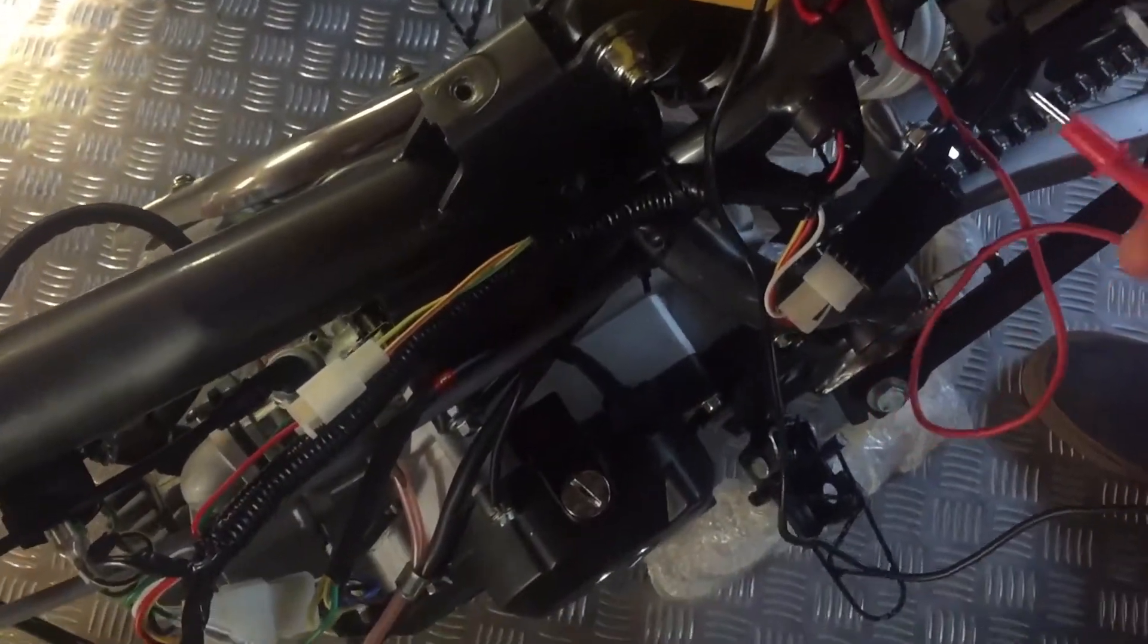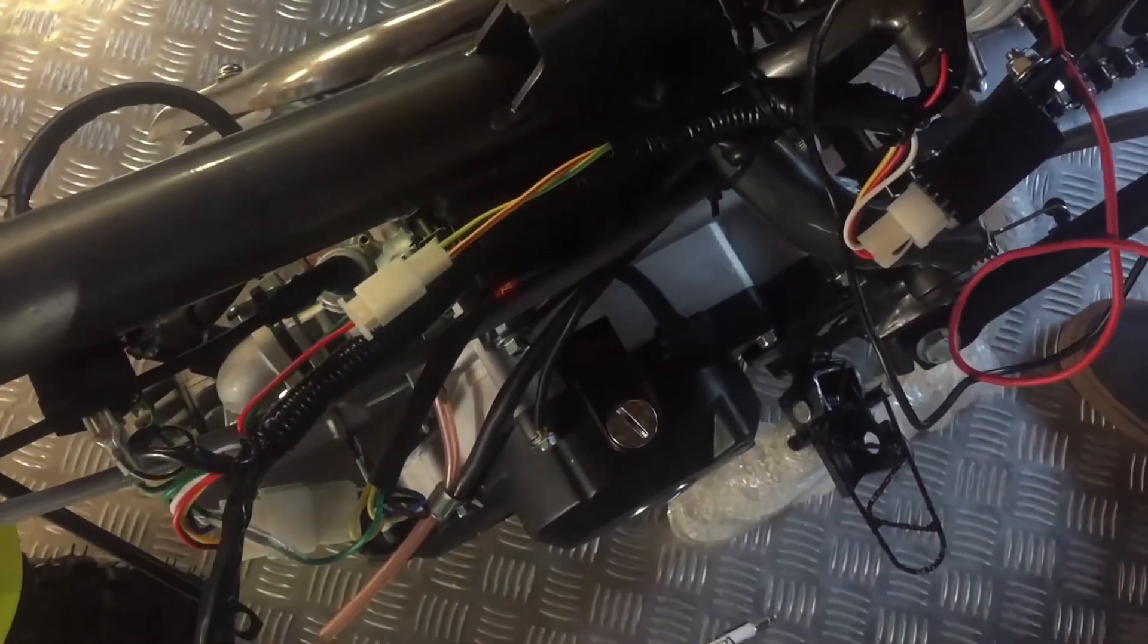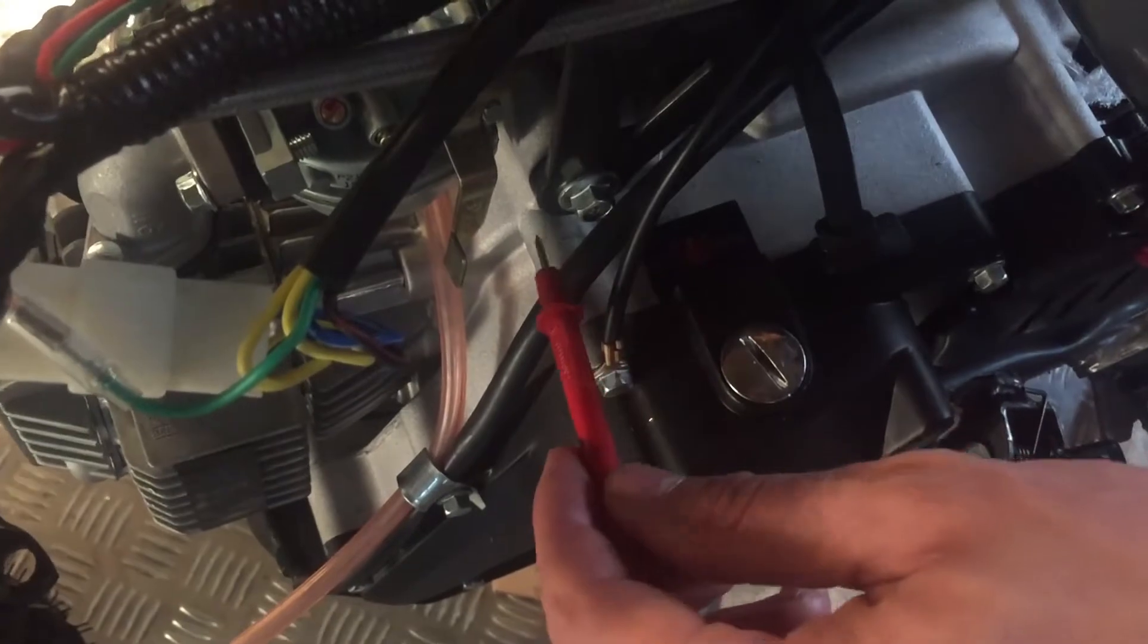We're going to get our lead and put it on the negative of our battery, and then we're going to put it on the earth to the frame. This should hopefully close the circuit. As you can see there it has, so if that still stayed at one or maybe a bit higher, there's something wrong.